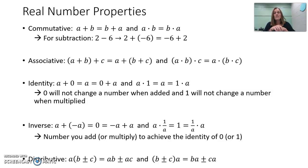And then the inverse are what number would you add in order to get the identity, or what number would you multiply in order to get the identity. So if we add a negative, that gives us zero, the identity. If we multiply by the reciprocal, that gives us one, the identity.